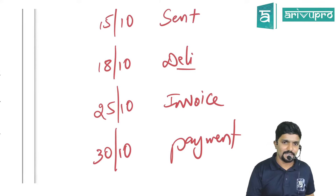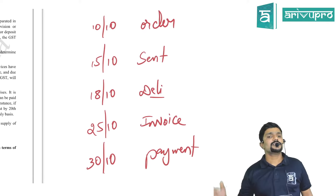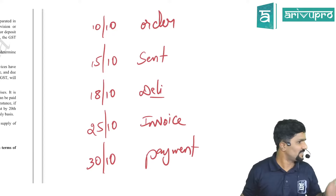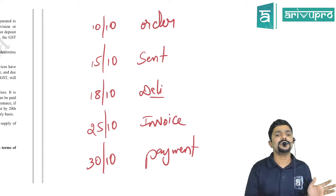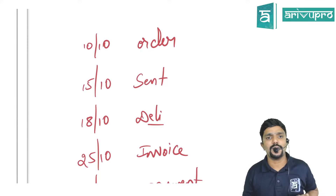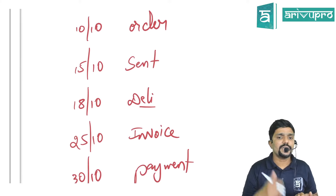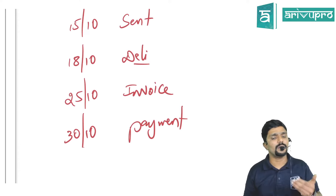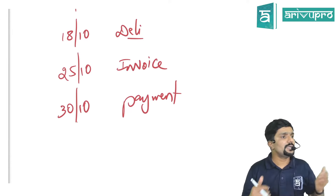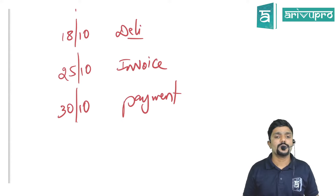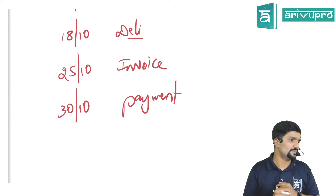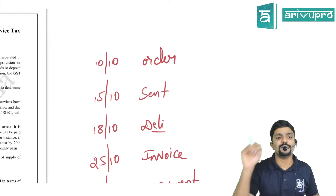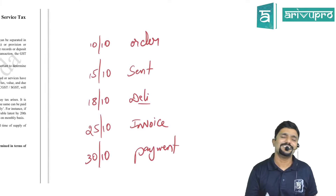These are different events that happened with respect to the same single transaction. I am the recipient, you are the supplier. I placed the purchase order on 10th October, you sent the goods on 15th October, delivered to me on 18th October, invoice sent on 25th October, and I made the payment on 30th October. Now we have a confusion — what is the Time of Supply? When did the supply take place? We have to decide as per the Time of Supply provisions.